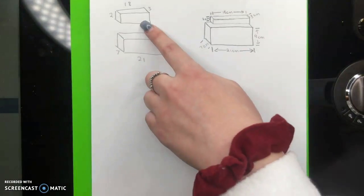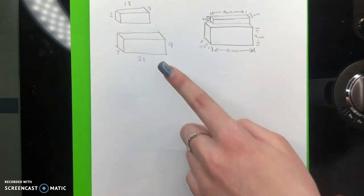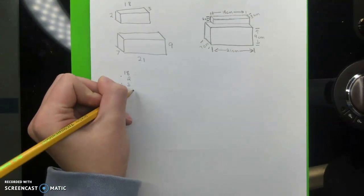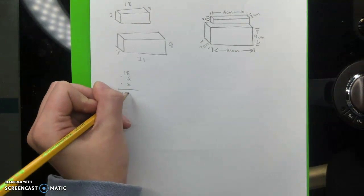For the first smaller box on top, you do 18 times 2 times 3, which is the length, width, and height multiplied, and you will get 108.